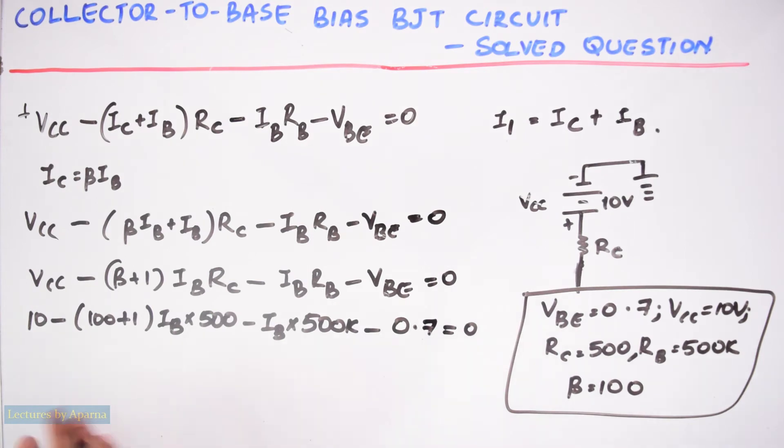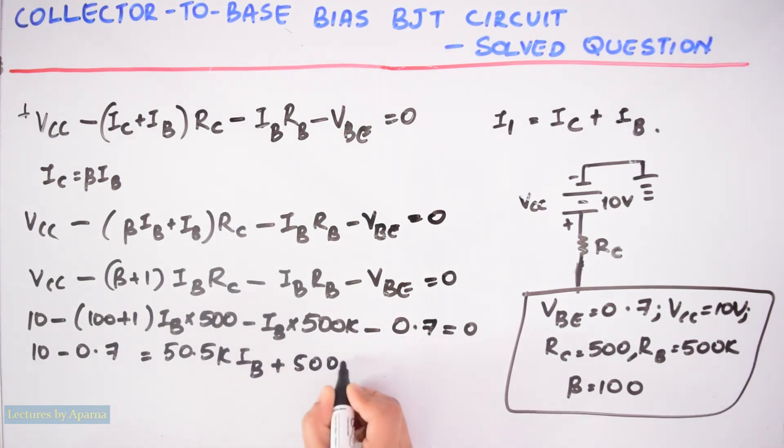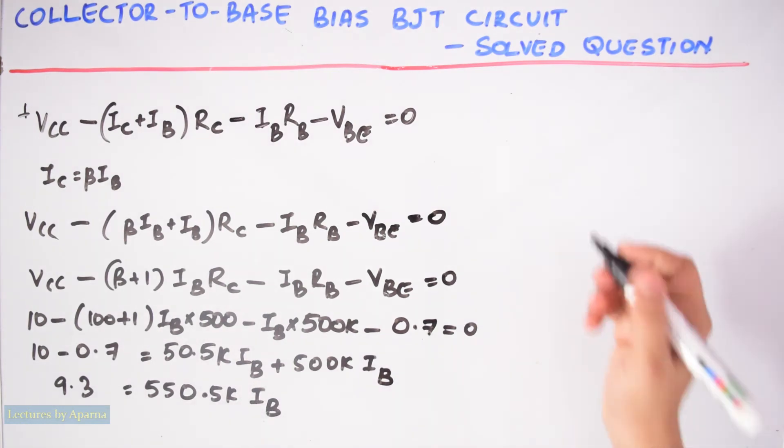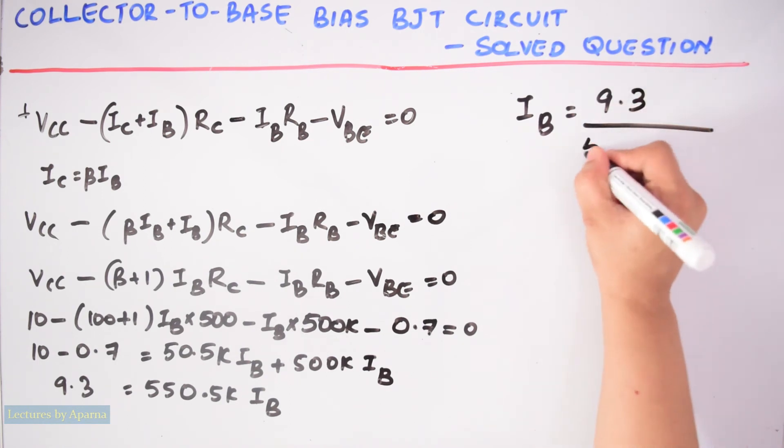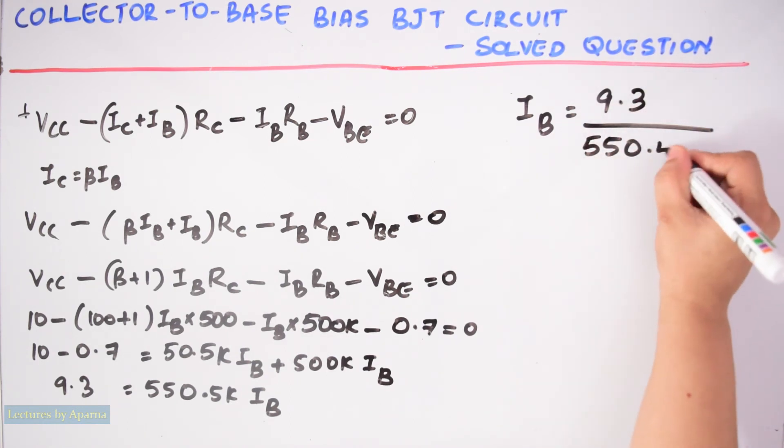So from this we can write it as 10 minus 0.7 is equal to 50.5k IB plus 500k IB. I brought these two terms on the other side. This will be equal to 9.3 is equal to 550.5k IB.